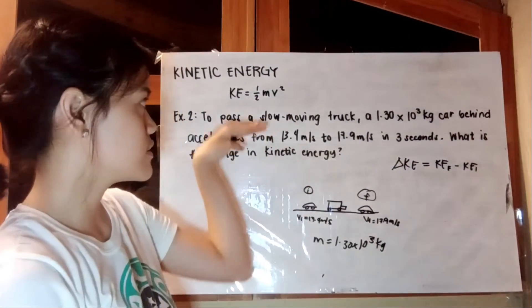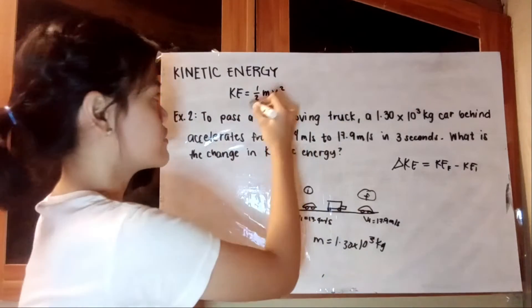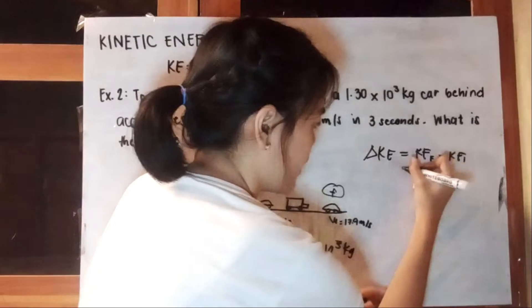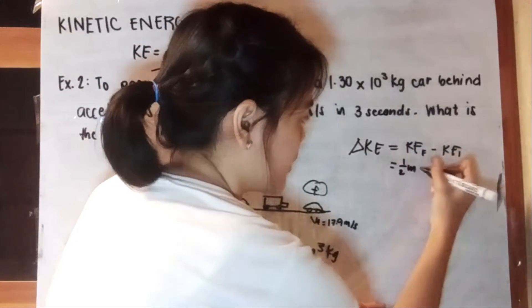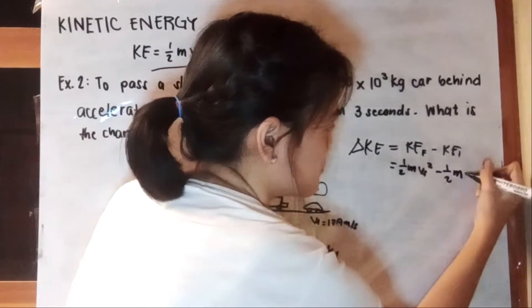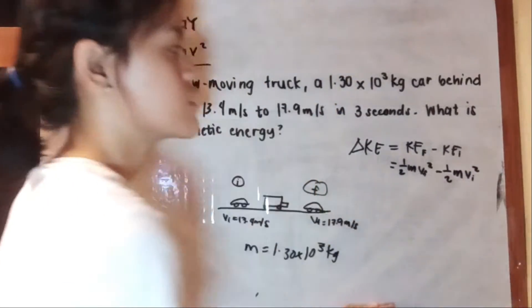We all know that the formula for kinetic energy is right here, one-half mv squared. So we have one-half mv final squared minus one-half mv initial squared.